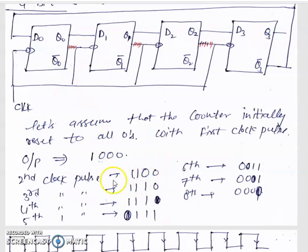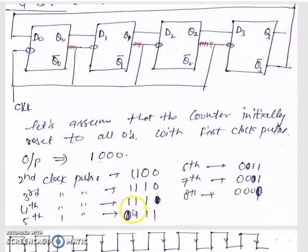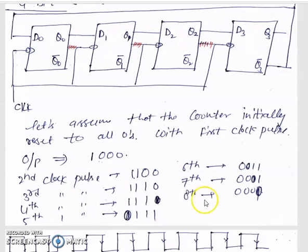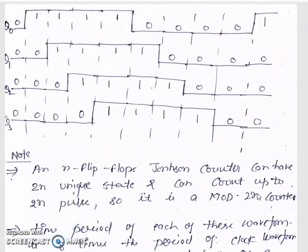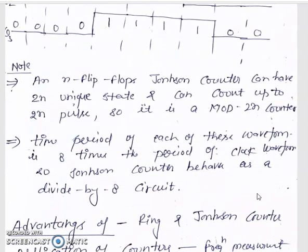In the third clock pulse, the state shifts to 1 1 1 0. In the fourth clock pulse it becomes 1 1 1 1. In the fifth clock pulse, Q3 is 1 so Q3-bar is 0; that 0 feeds back to D0, giving 0 1 1 1. In the sixth clock pulse the state is 0 0 1 1, in the seventh it is 0 0 0 1, and in the eighth it returns to 0 0 0 0, after which the sequence repeats.